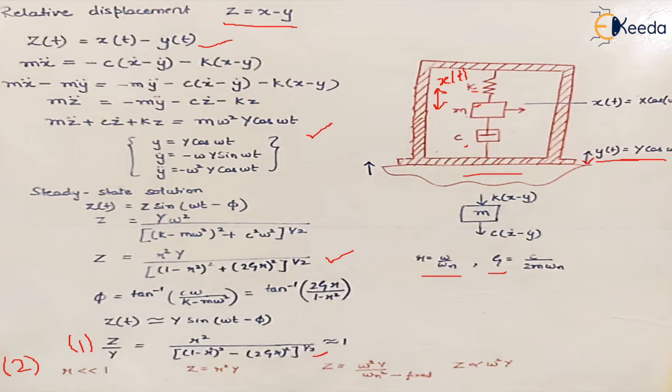So we can say that z is almost equal to r squared into y and what is r? It is omega squared upon omega_n squared. That means for r to be small, omega_n has to be large, and omega_n is under root k upon m where k is the spring coefficient and m is the mass of the body being used.